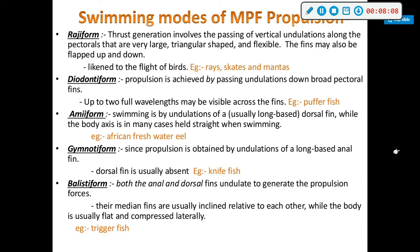If you want to visually see any of these, you could Google 'rajiform multi-paired fin propulsion' and it will show you on YouTube how these movements look. Amiiform swimming is propulsion by undulations of a usually long-based dorsal fin while the body axis in many cases is held straight when swimming.